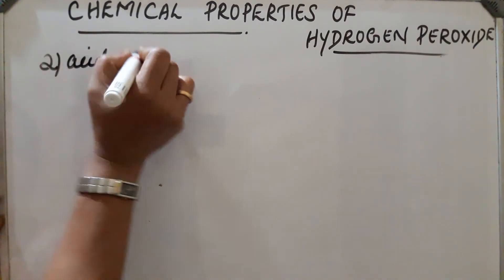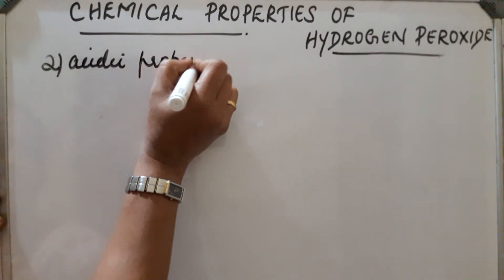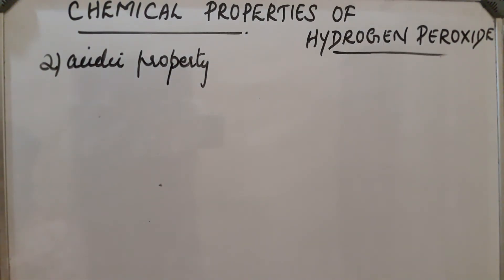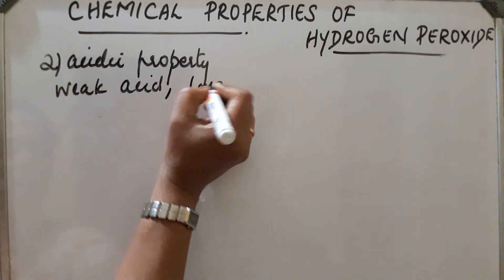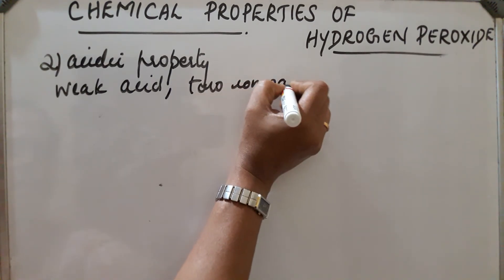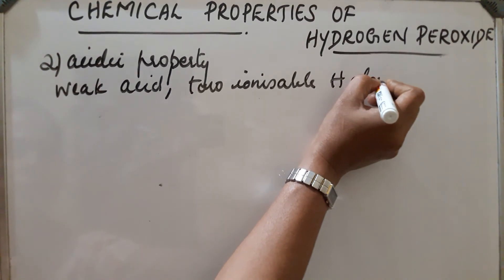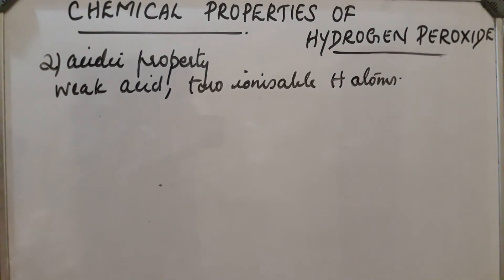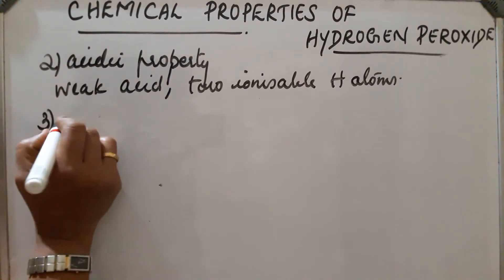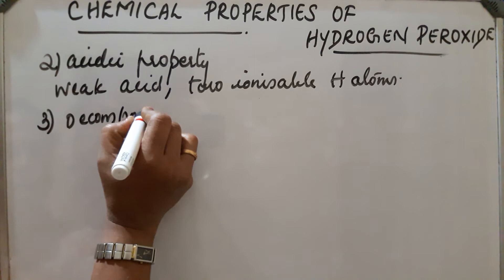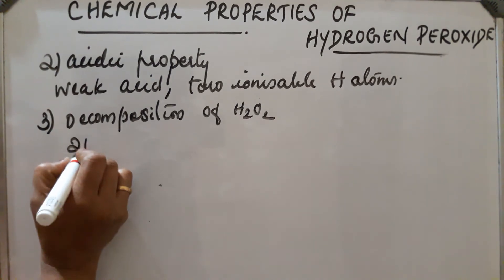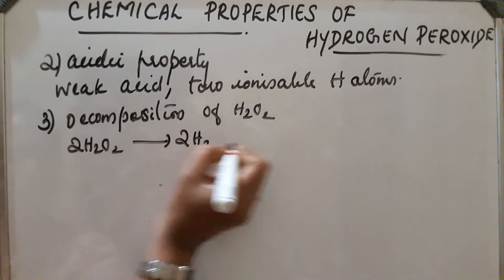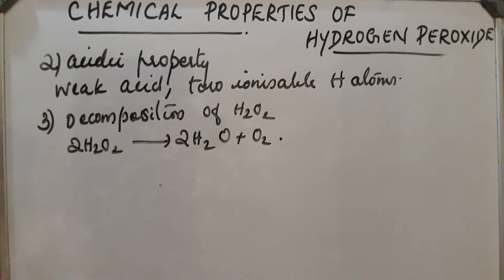Second important chemical property: acidic property. H₂O₂ is a weak acid with 2 ionizable hydrogen atoms. Third property: decomposition — 2 H₂O₂ gives 2 H₂O plus O₂; oxygen gas is liberated and H₂O₂ is an unstable liquid.